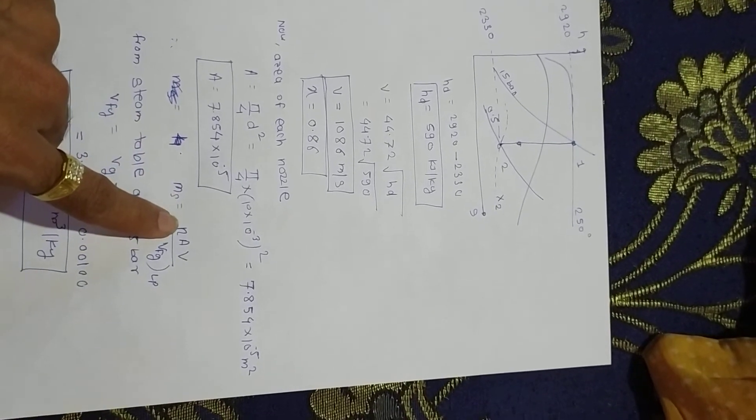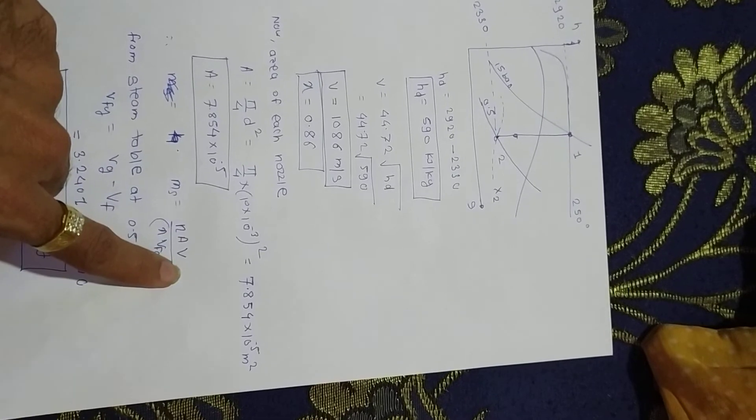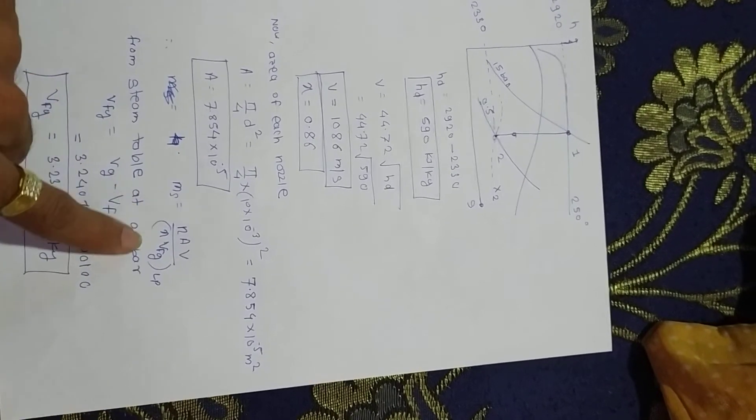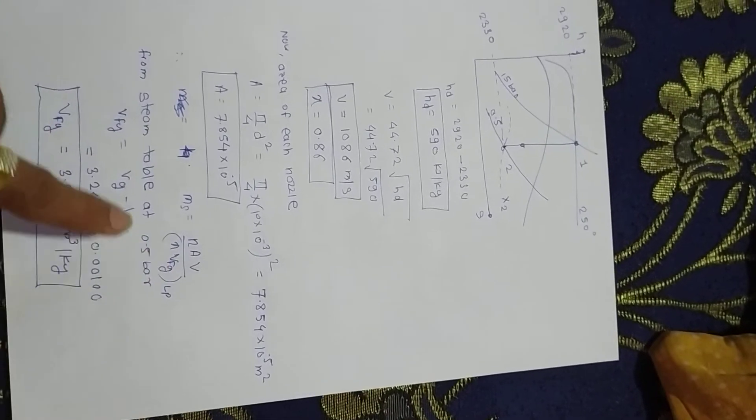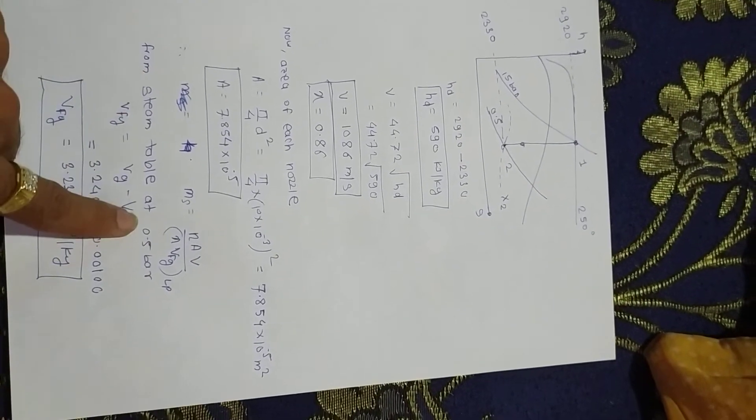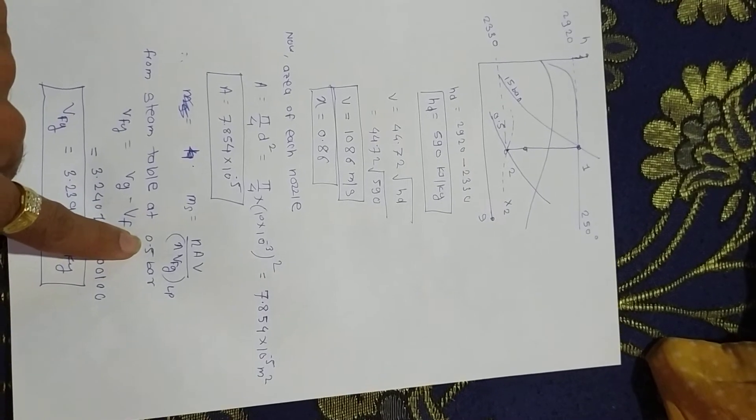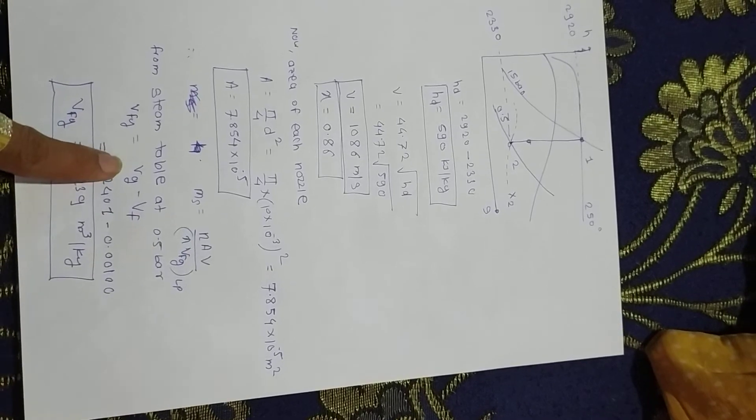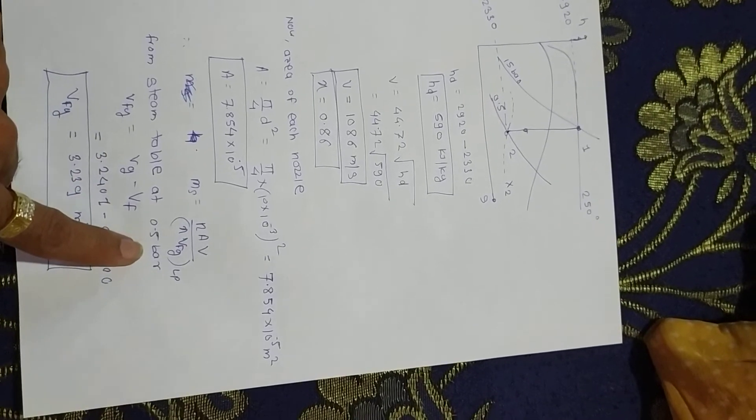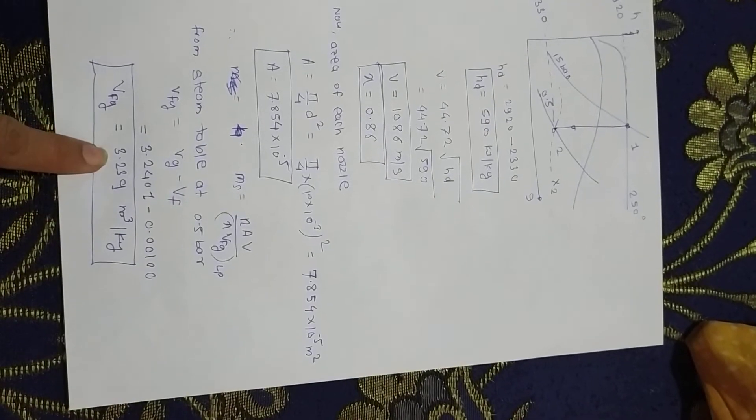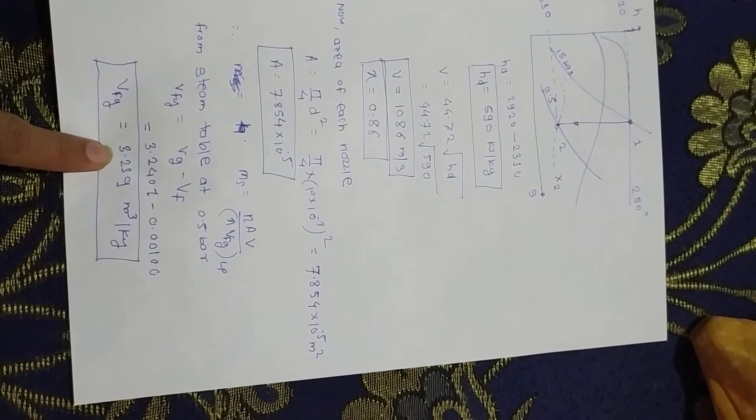Now for mass of steam, N is given. We can calculate the final condition of steam also, X2 is 0.86. Now how to calculate VFG? VFG equals VG minus VF. From steam table at 0.5 bar, take the value of VG and VF. You can get VFG is around 3.239 cubic meters per kg.